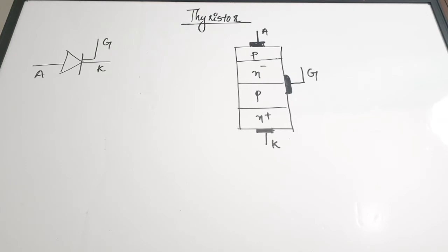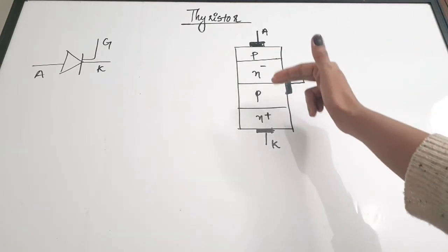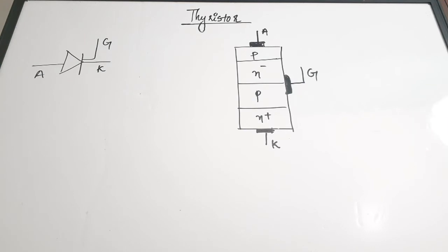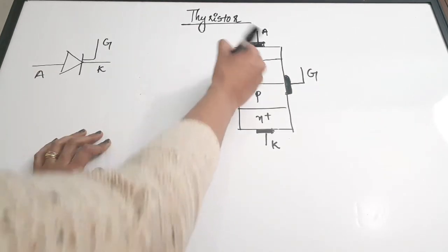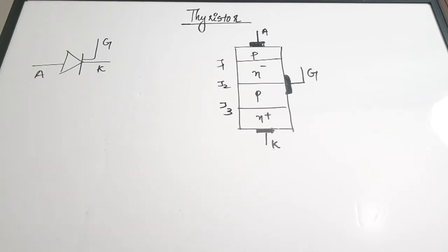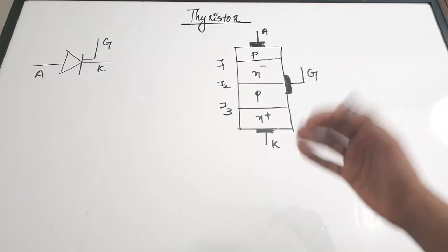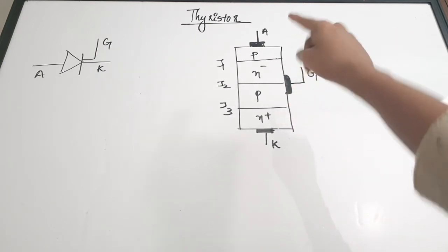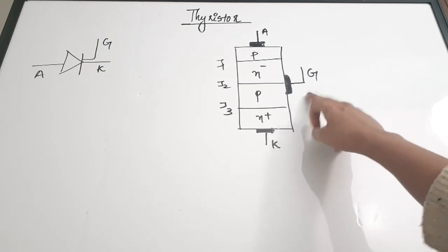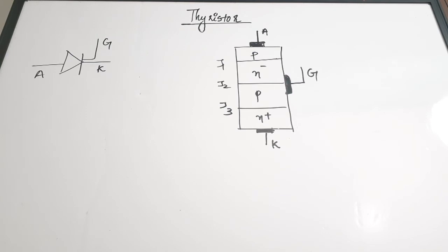One of the most important features of a thyristor is that it is a three-terminal device with four layers. The layer arrangement is P, N⁻, P, and N⁺ — an alternating PNPN arrangement. There are three P-N junctions: J1, J2, and J3. The cathode terminal is taken from the N region, the anode from the P region, and the gate from the gate region.